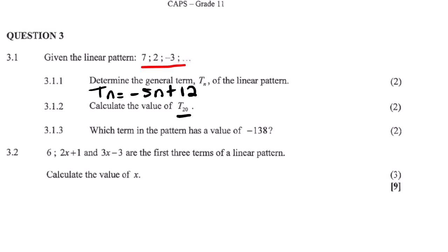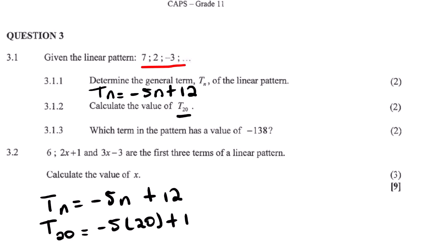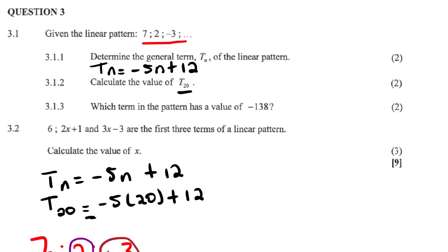To find t20, we simply use our general equation. Where we see n, we substitute 20. So negative 5 multiplied by 20 gives negative 100, plus 12, which equals negative 88. The answer to this question is negative 88.